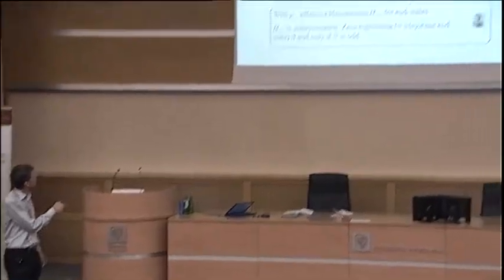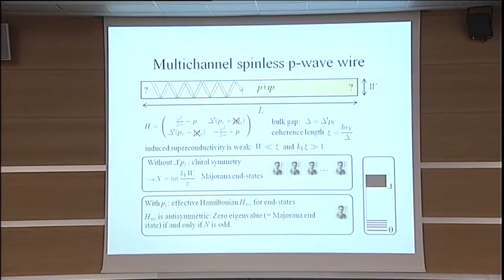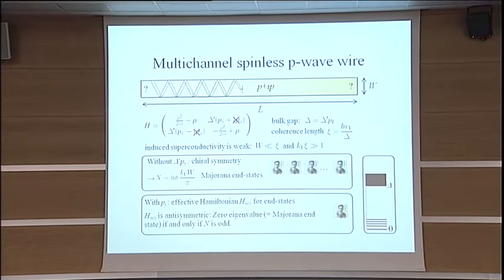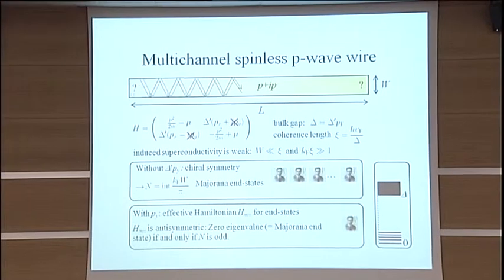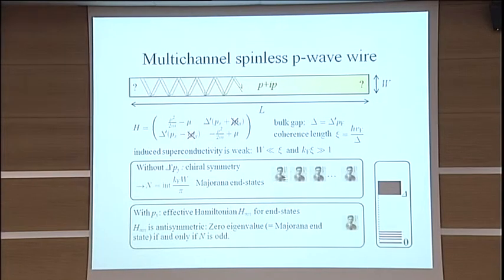If you leave it out, this Hamiltonian actually has an extra symmetry. It's called a chiral symmetry. In the Pauli matrix language, you see that it anticommutes with sigma Y. And that anticommutation with sigma Y for the theorists among you gives you the property that if you have N channels, in principle there can be N Majoranas, so one for each channel and one at each end. So there will be N Majorana bound states, but that was of course without this Py term.